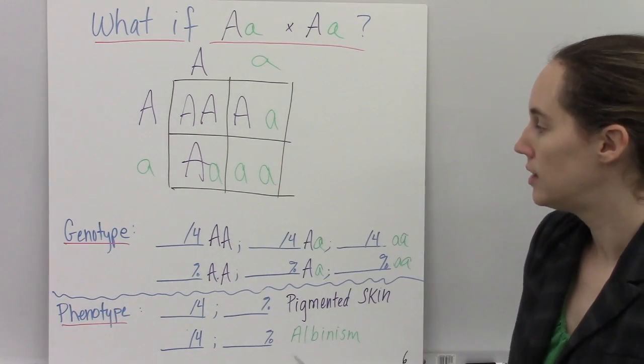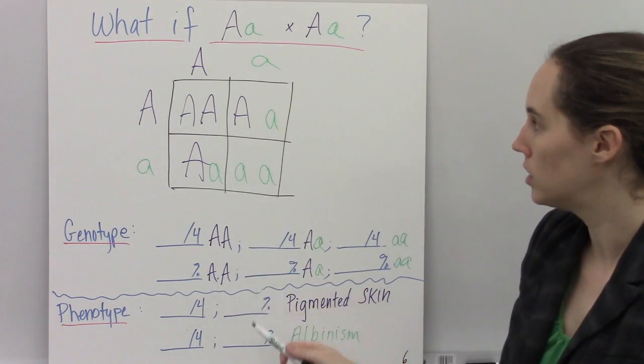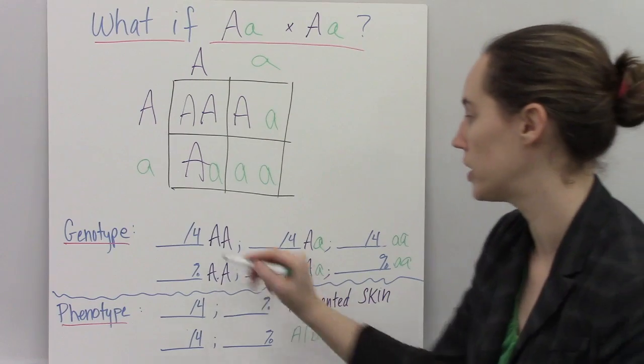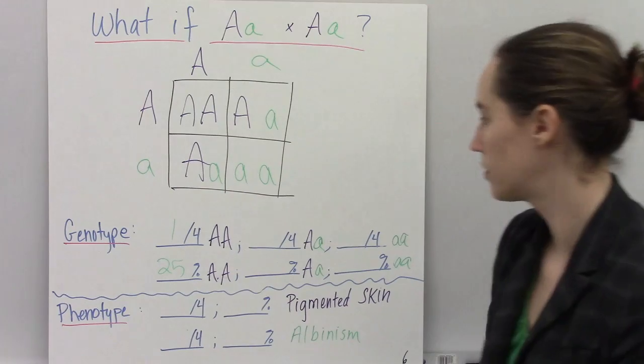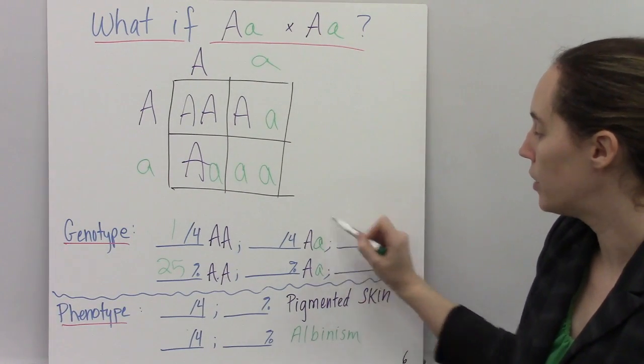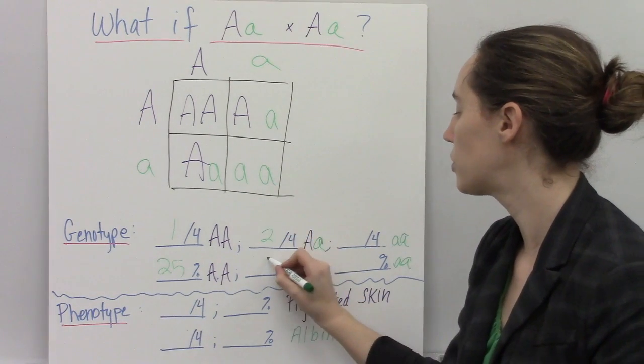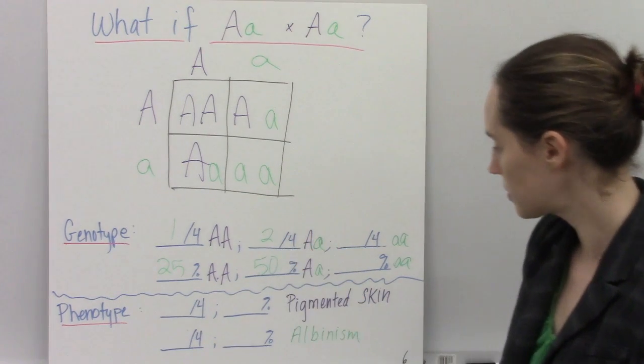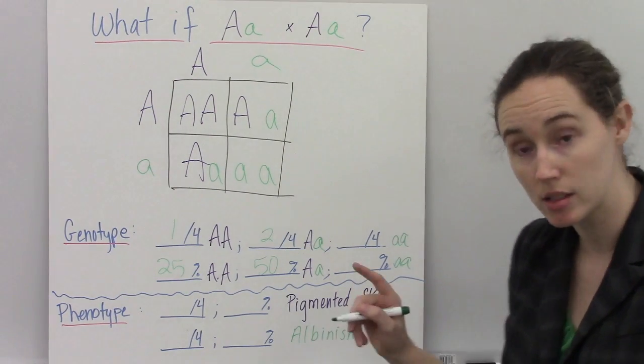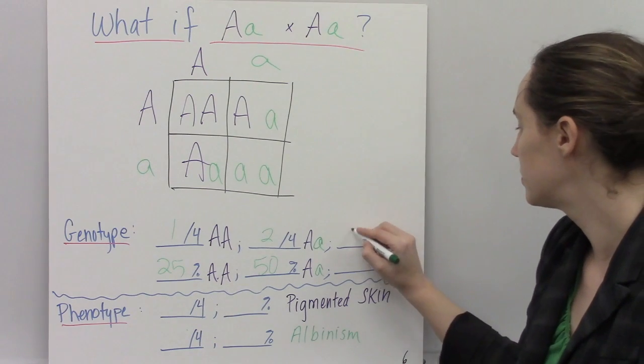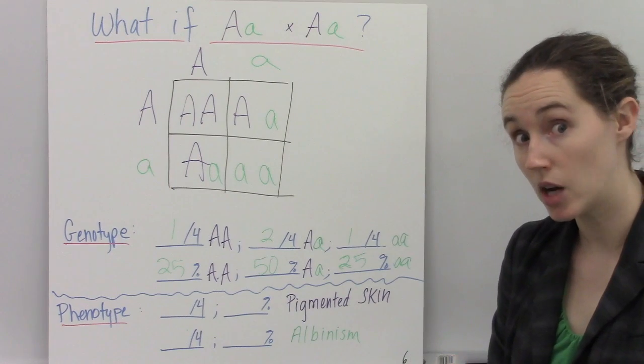So now that it's completed, how many out of four of these are homozygous dominant? Well, one out of four is, which makes 25%. How many are heterozygous carriers? One, two, so I have two out of four, which is 50%. And then, how many are homozygous recessive? There's just one here, which is another 25%.